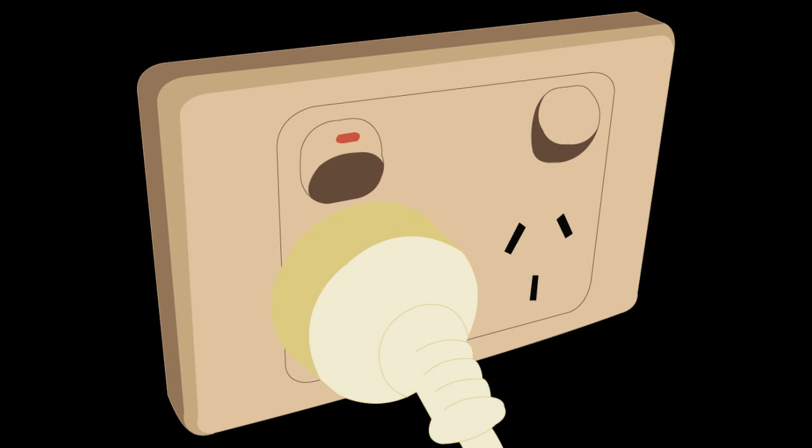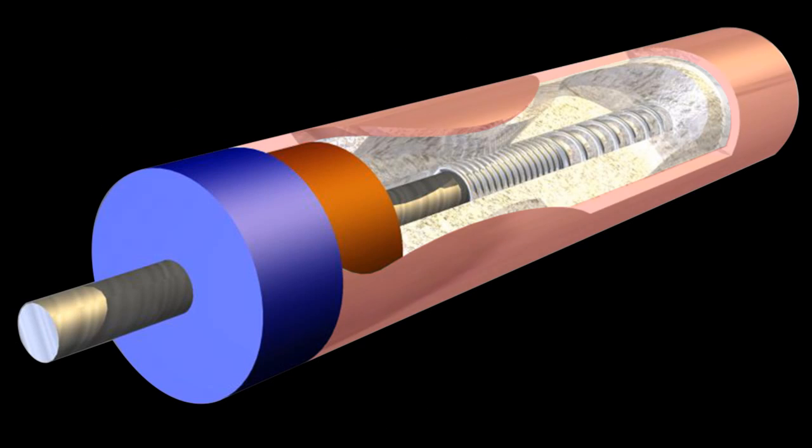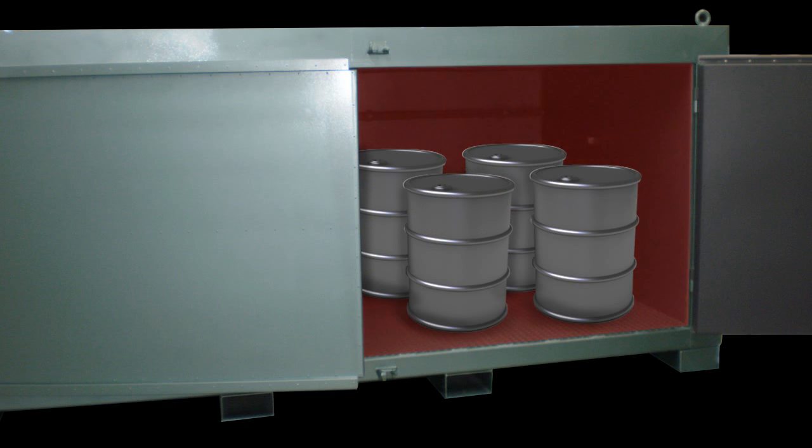When electricity is passed through the wire, the resistance created through the magnesium oxide generates heat which warms the element and in turn the product or process being heated.